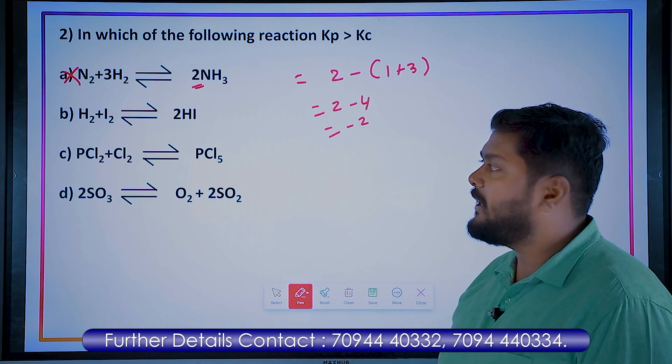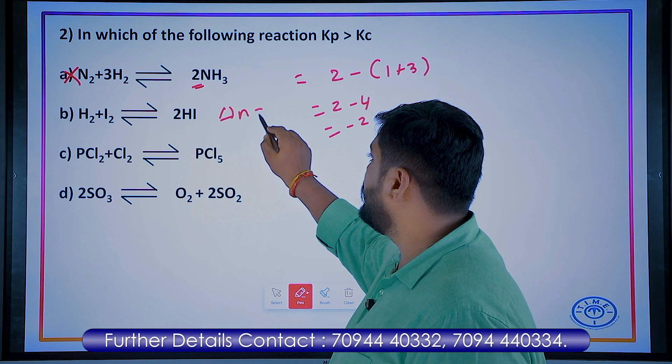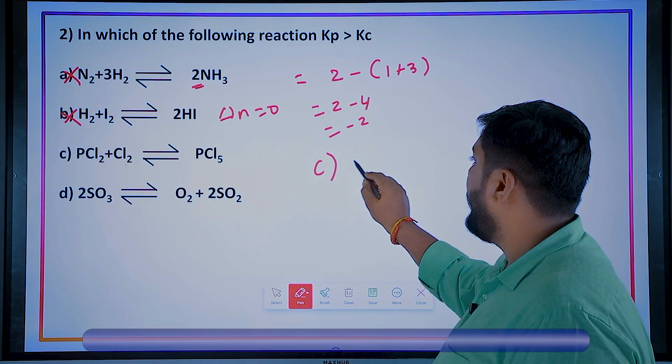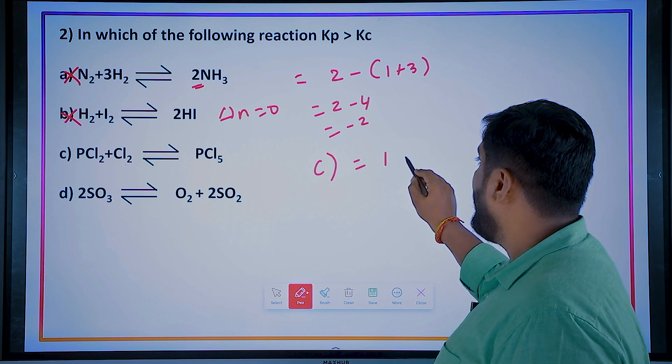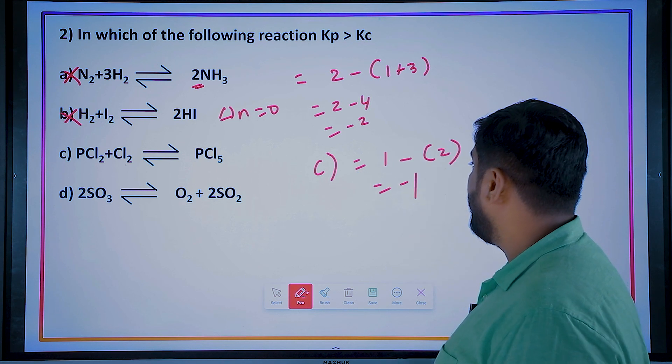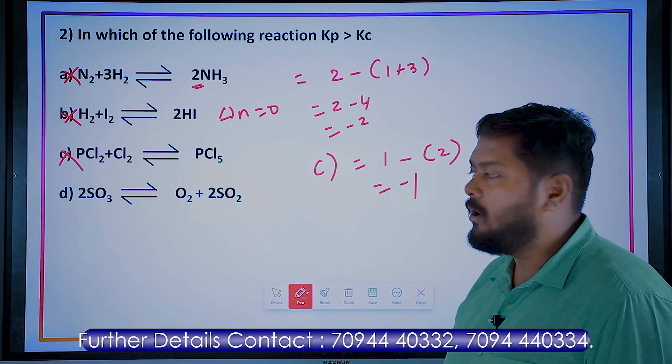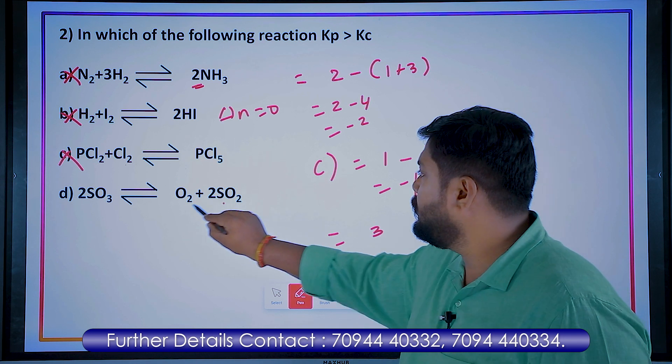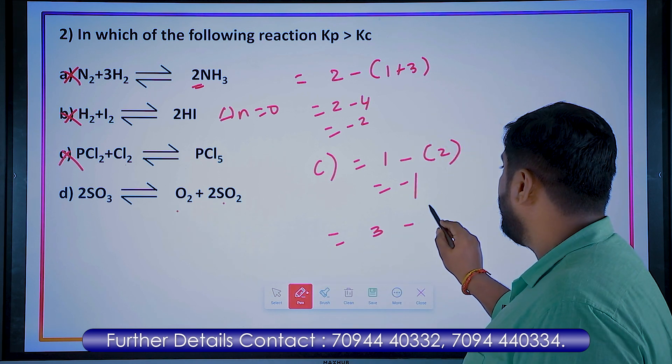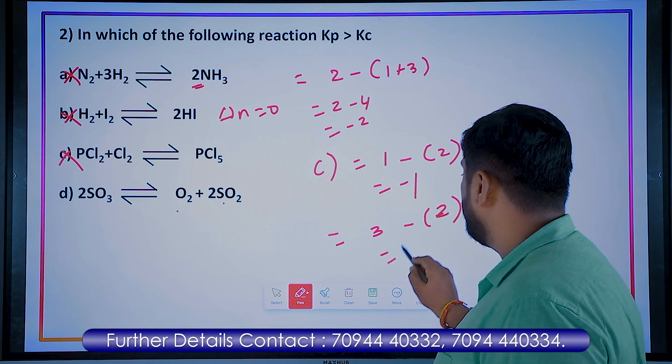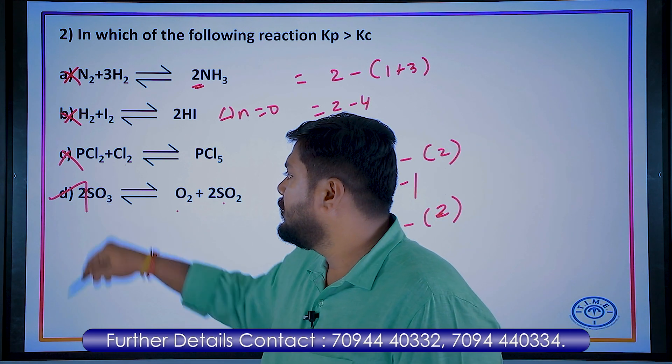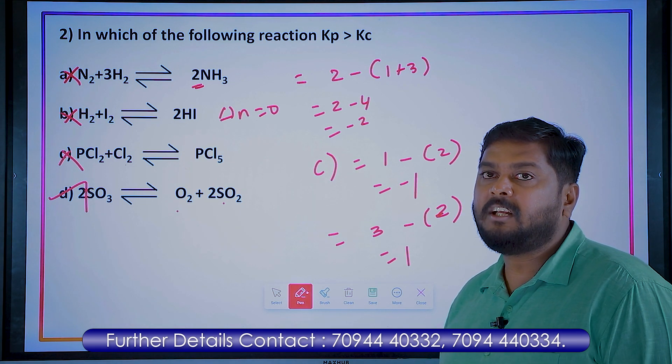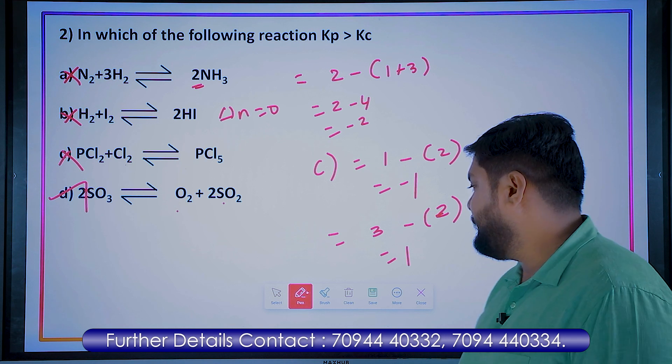Already you know H2 plus I2 has delta n zero, so not an option. Third option C: 1 minus 2, that is minus 1. So this is also wrong. And the fourth one: that is 2 plus 1, 3 minus 2, which equals 1. So in this case, the fourth equation, decomposition of SO3, will have Kp more than Kc.